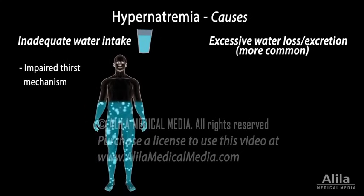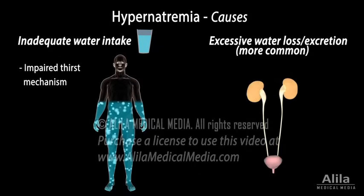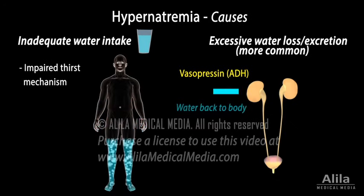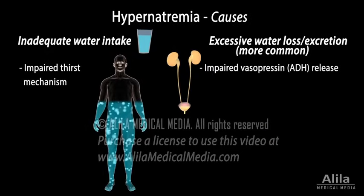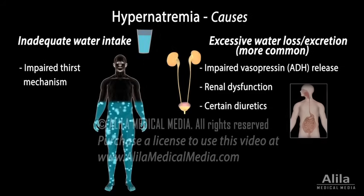Impaired thirst mechanism is a common cause of hypernatremia in the elderly. The body loses water primarily by excreting it in urine. Water excretion by the kidneys is mainly regulated by vasopressin, a hypothalamic hormone that causes the kidneys to retain water in response to low blood volume or high plasma osmolality. Impaired vasopressin release, renal dysfunction, and use of certain diuretics are common causes of excessive water loss through the kidneys.